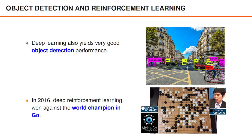Another impressive achievement took place in 2016 when deep reinforcement learning was used to beat the world champion in Go. Prior to this, people argued that the complexity of this game made it a grand challenge for machine learning, and it was expected to take many years to reach human performance. Apart from the examples mentioned above, deep learning is of course also used in a range of other fields, including medicine, chemistry, and finance.